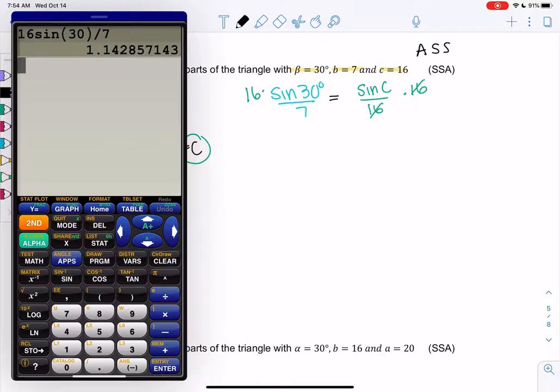And this is actually not going to work. So sine of C equals 1.14. Sine is never greater than 1.